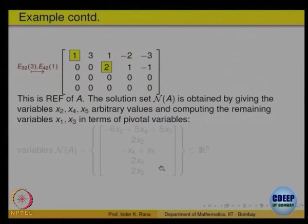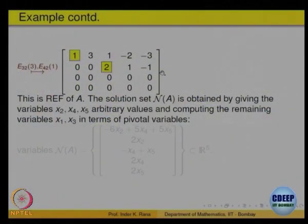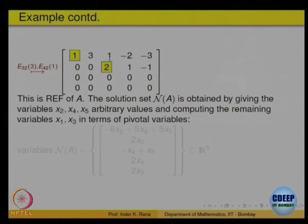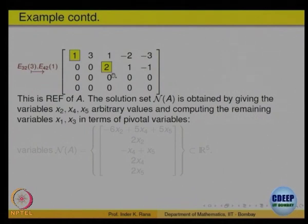Now, what is the next thing I want to do? I want to find the nullity. How do I find the nullity? I should describe the null space — all solutions of Ax = 0. Taking this matrix and writing x1, x2, x3, x4, x5 equal to 0, what equations do I get? The first gives x1 + 3x2 + x3 − 2x4 = 0, and the second gives 2x3 + x4 − x5 = 0. So only 2 equations. Rank equals 2, and n equals 5.